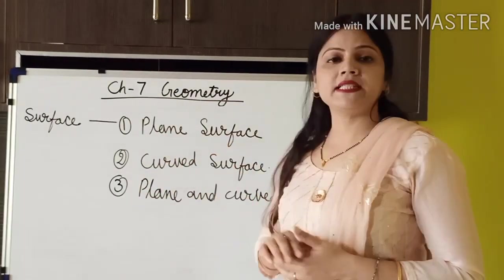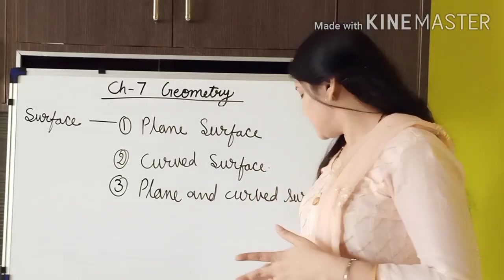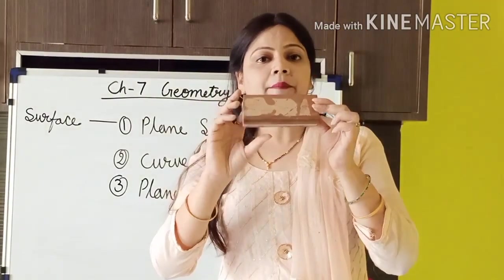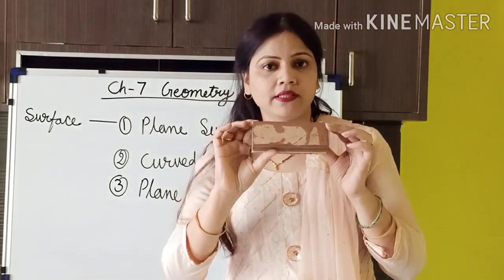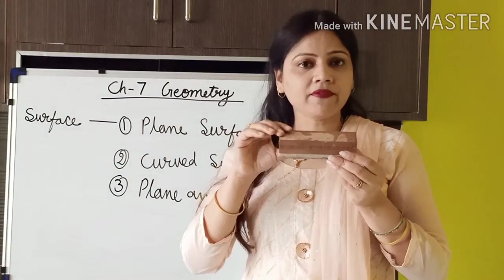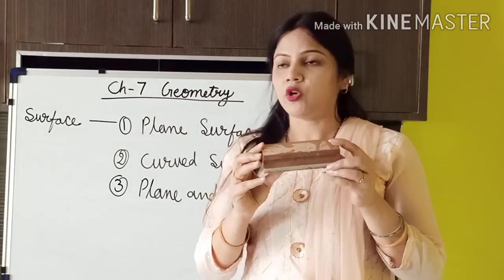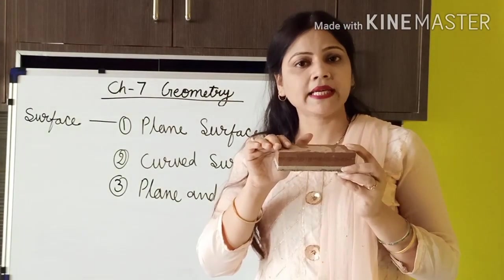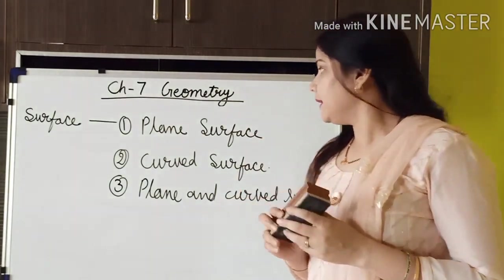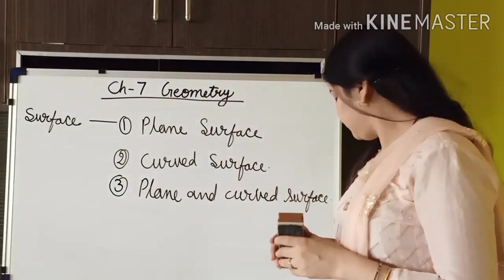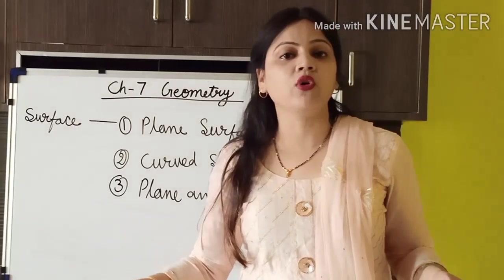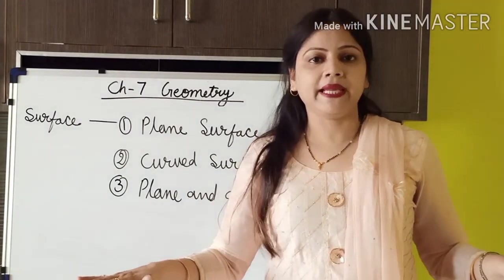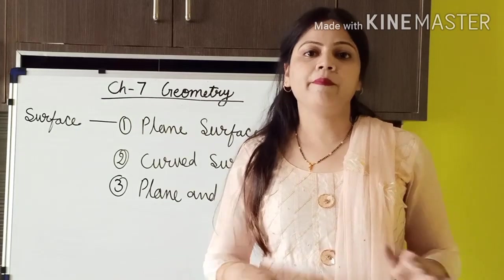The first one is plane surface. Like I have shown here, this is the example of a cuboid. The top of the cuboid is plane. So the surface of this cuboid is plane. Similarly, you can also see the floor of your home — this is also plane. The surface is plane.